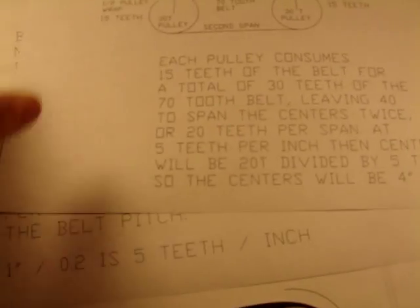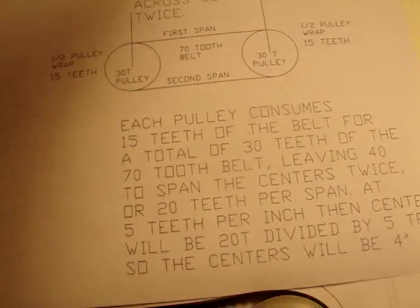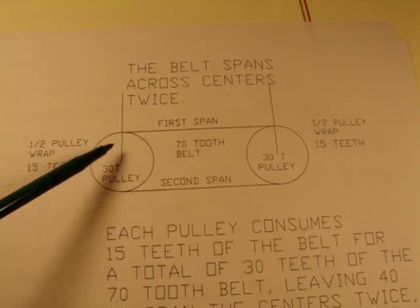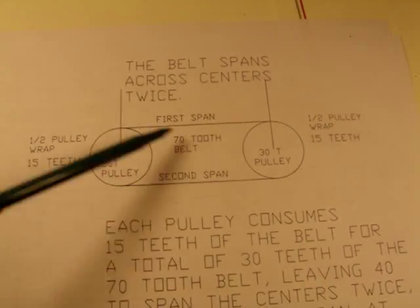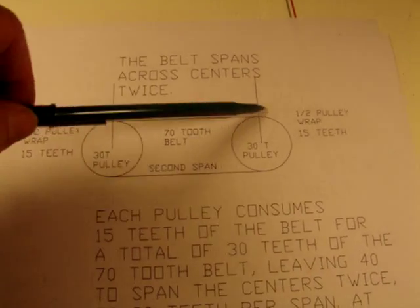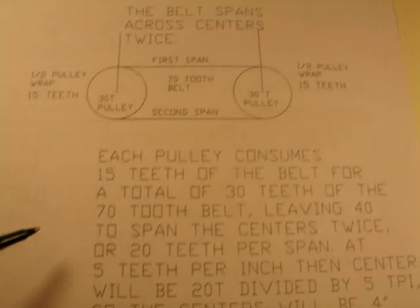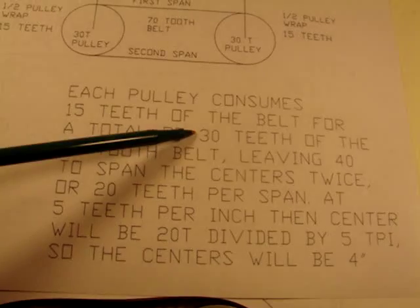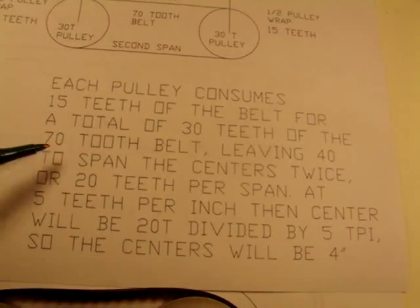So what we're going to do in this case is the belt spans across the center distance twice, and it wraps halfway around one pulley and halfway around another pulley. So each pulley consumes 15 teeth of the belt, or a total of 30 teeth of the 70-tooth belt.